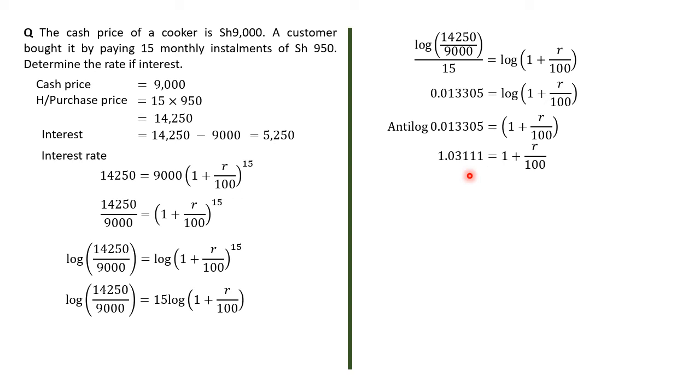In this case, the value of R is going to be, we take 1 to the other side, so that what you have before the equal sign minus 1 gives us this figure, and therefore, we have 0.03111 is R over 100. So, what will be the value of R? R will be, you just multiply by 100 both sides, you get the rate of interest per month will be 3.111.